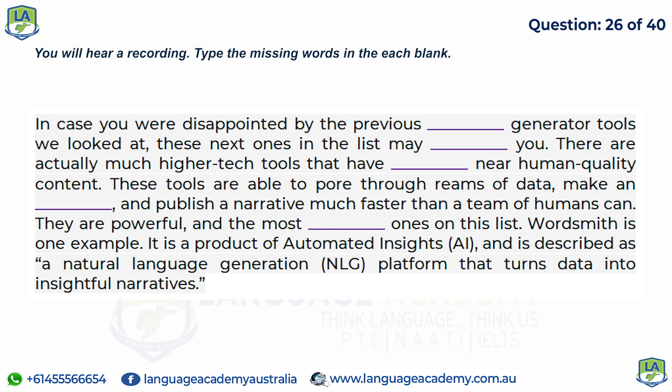In case you were disappointed by the previous content generator tools, these next ones on the list may surprise you. There are actually much higher-tech tools that have produced near-human quality content. These tools are able to pour through reams of data, make an analysis, and publish a narrative much faster than a team of humans can. Wordsmith is one example — it is a product of Automated Insights (AI) and is described as a natural language generation (NLG) platform that turns data into insightful narratives.